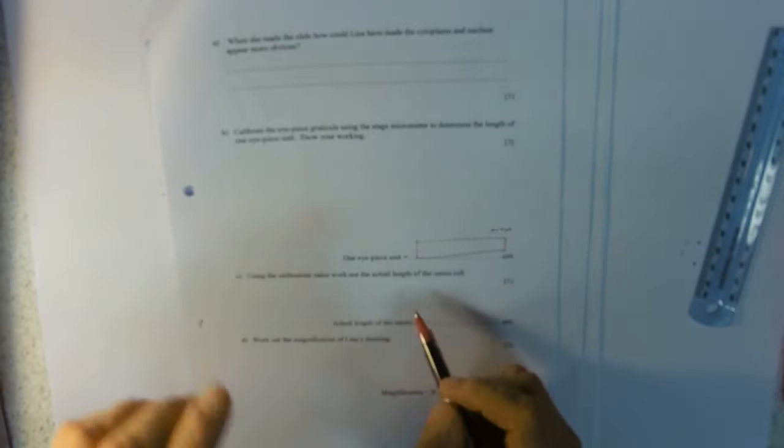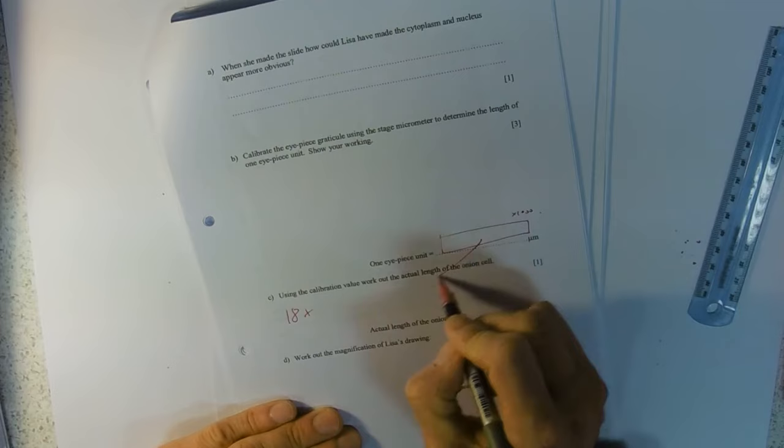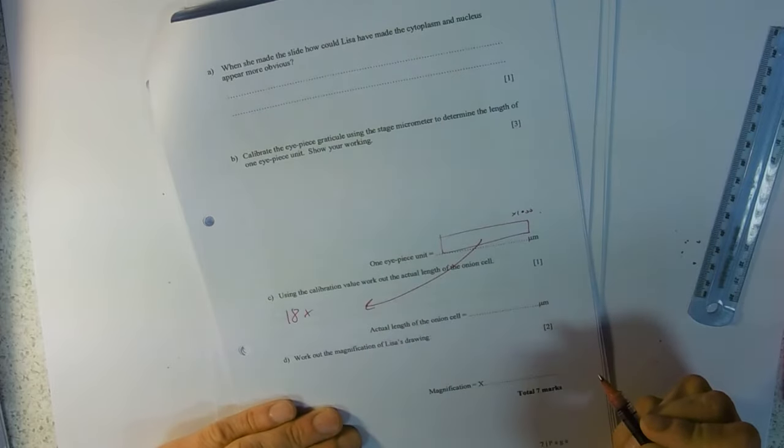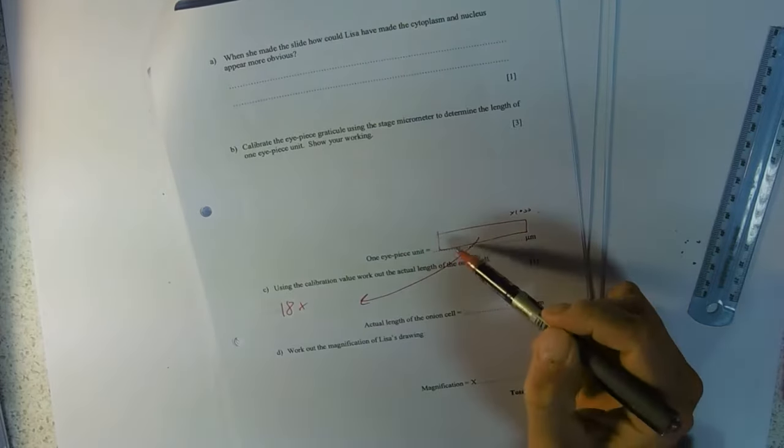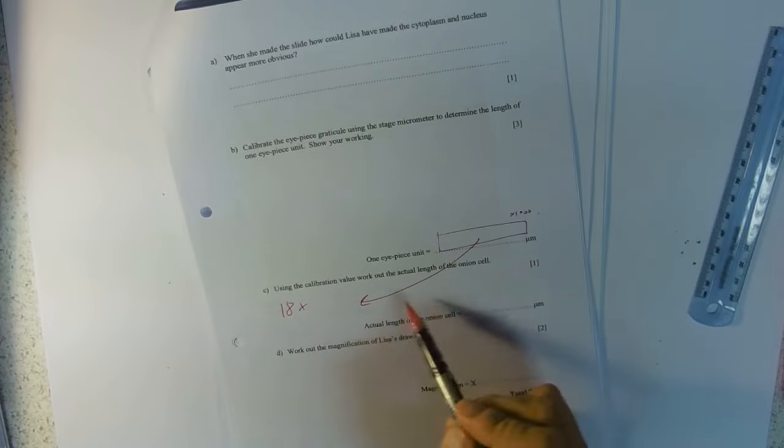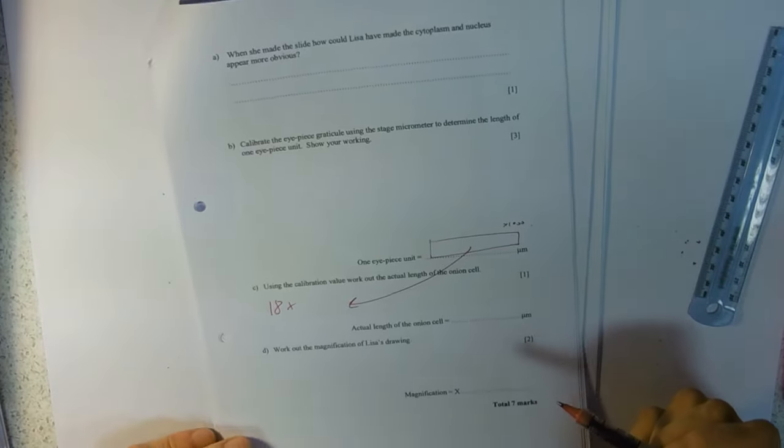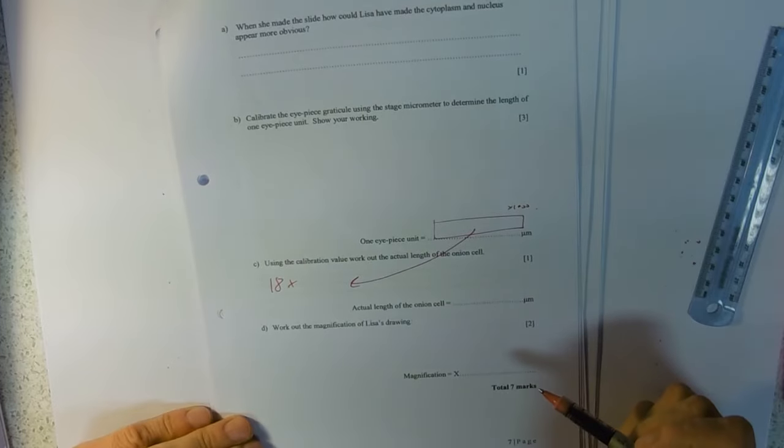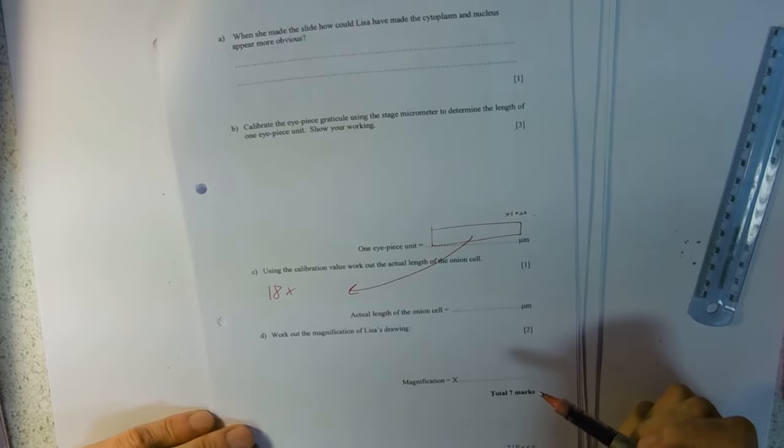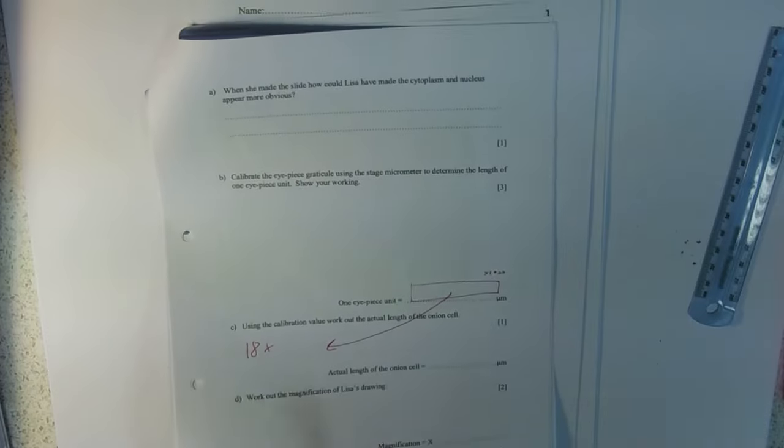And then the actual length of the onion cell - we've got 18 eyepiece units, so it's 18 times by whatever we had there. So even if you mucked this up, you might get the mark down here. That error might be carried forward. Work out the magnification.